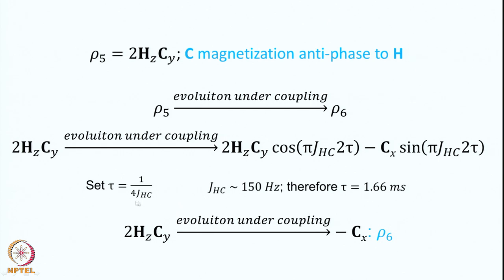Once again we adjust τ to equal 1/(4J_HC). Assuming J_HC is approximately 150 Hz, τ will be approximately 1.66 to 1.7 milliseconds. With this choice, the cosine term goes to 0 and the sine becomes 1, so the 2HzCy term vanishes. Therefore ρ6 is simply equal to −Cx.